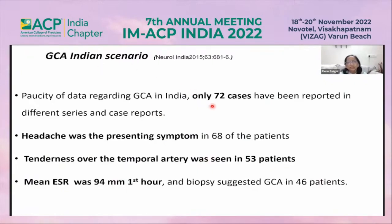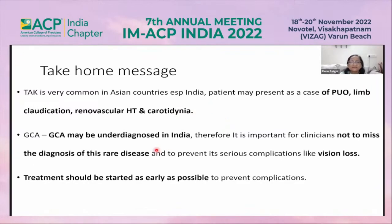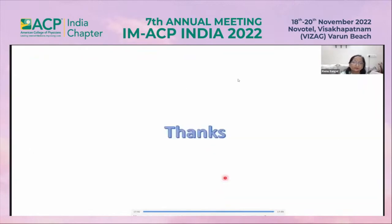In the Indian scenario, only 72 cases of giant cell arteritis have been reported; headache was the presenting symptom, with tenderness over the temporal artery and high mean ESR of 94 mm in 46% of patients. Take-home messages: Takayasu arteritis is very common in Asian countries including India, and patients may present as PUO, limb claudication, renovascular hypertension, or carotidynia. Giant cell arteritis may be underdiagnosed in India; clinicians must not miss this diagnosis to prevent serious complications like vision loss. Treatment should be started as early as possible to prevent complications in both conditions.